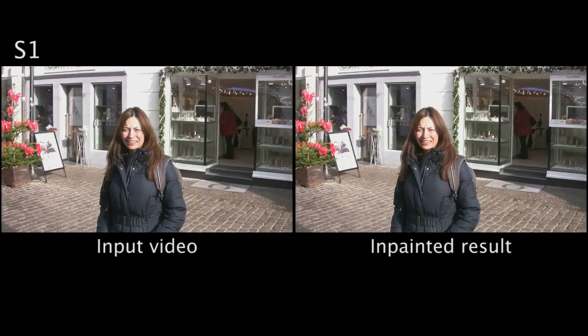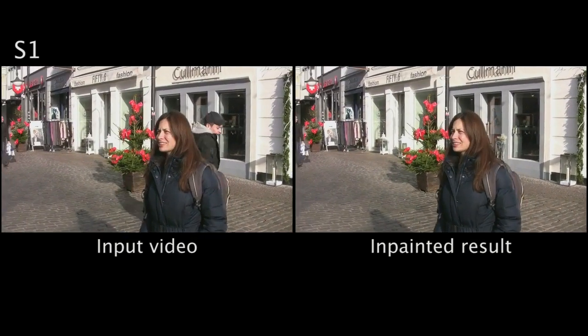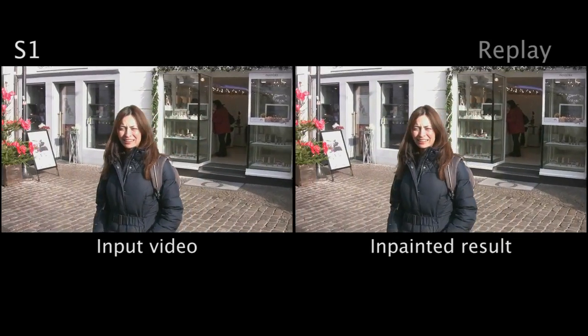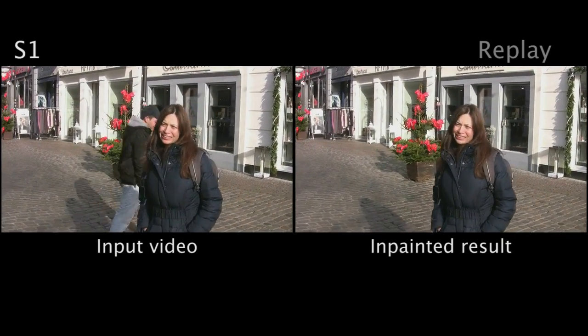In this video, we describe an in-painting method for removing dynamic objects that occlude static scene backgrounds. Our method receives as input a video and a mask marking both the dynamic object to be removed, and the other dynamic objects that should remain in the scene.